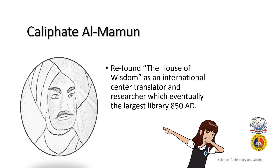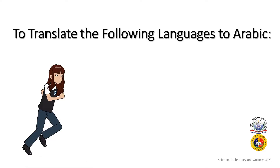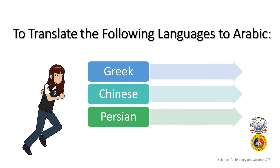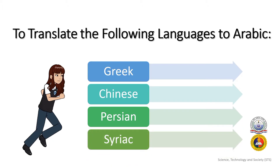Caliph Al-Mamun founded the House of Wisdom, an international center for translation and research, which eventually became the largest library by 850 AD. As a library and translation institute, it translated many important foreign works of science and philosophy into Arabic and Persian, thereby enriching Arab scientists and thinkers. The languages encountered during the translation movement included Greek, Chinese, Persian, and Syriac. After Al-Mamun, there was more collaboration with other civilizations to gain a greater collection of knowledge.